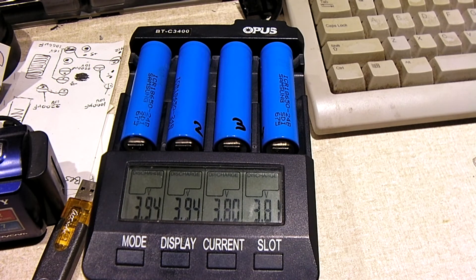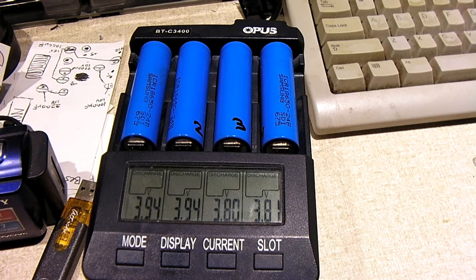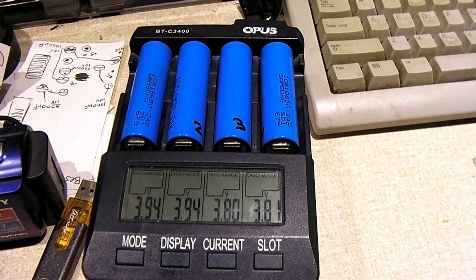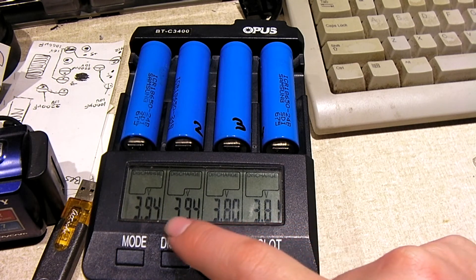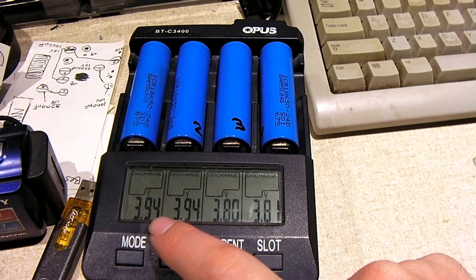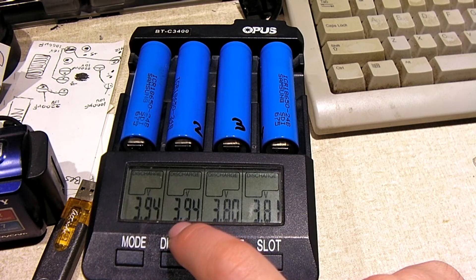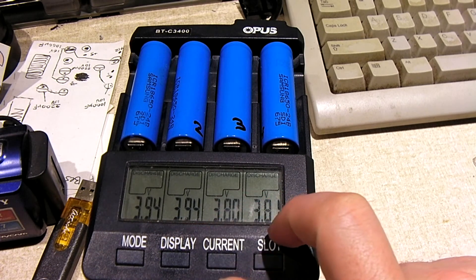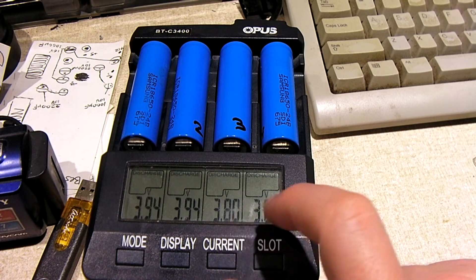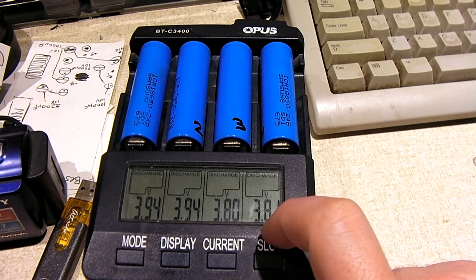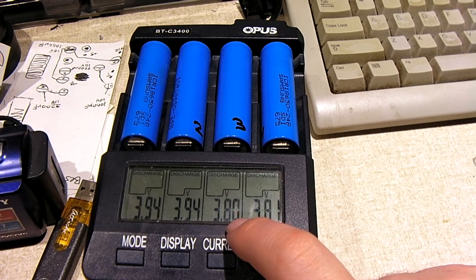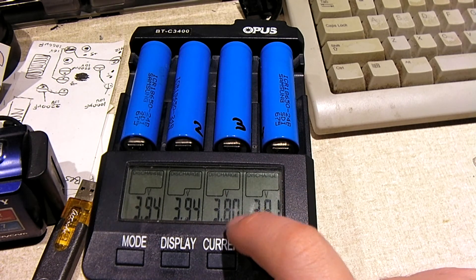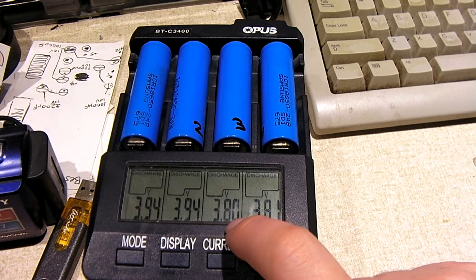Okay everybody, so these cells just finished the discharge and the results are less than spectacular. Look at the voltages that they're resting at first. Cell 1 and cell 2 are resting at 3.94. Cell 3 and cell 4 are resting at 3.8 and 3.81 respectively. That's not very good. This charger, I found out because I was watching it, this charger actually terminates at 2.8 volts.